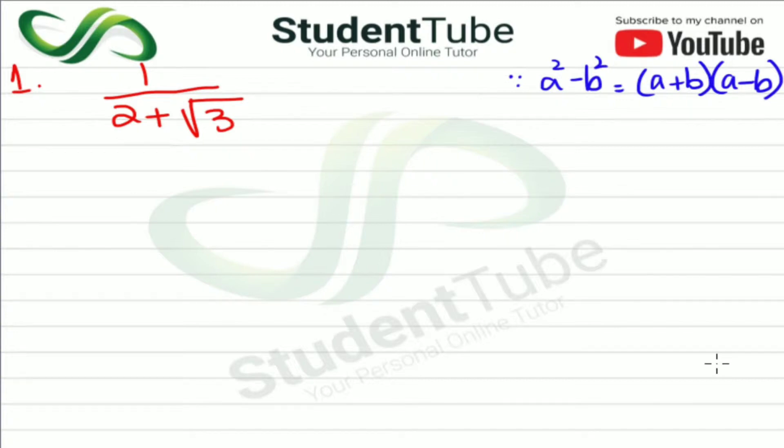What do we do for the question? First, we will put equal here and write it back: 2 plus under root 3. Now, what is the opposite sign? Minus. We will multiply it by 2 minus under root 3 and 2 minus under root 3.